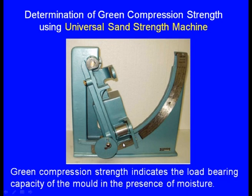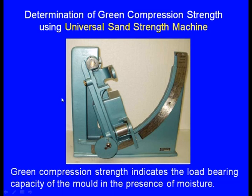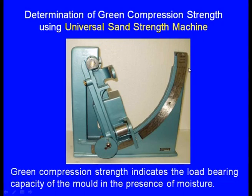As the pendulum is going up, the weight of the pendulum falls on the sand specimen. At one stage the specimen breaks, and a magnet carried along with the pendulum is arrested at that point. The magnet's arrest position on the scale indicates the green compression strength. Using the same universal sand strength machine, we can also measure the green shear strength.